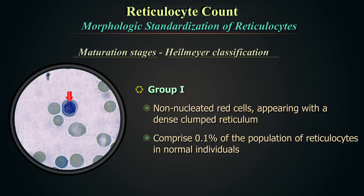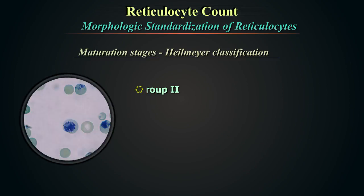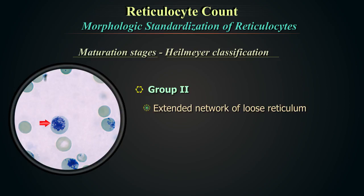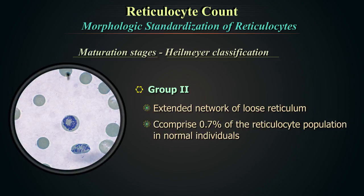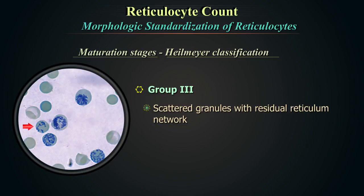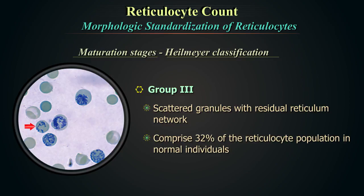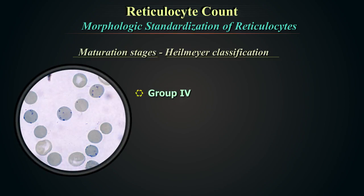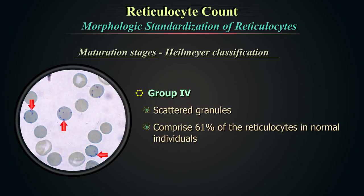Group 1 cells comprise 0.1% of the reticulocyte population in normal individuals. Group 2 represents an extended network of loose reticulum, comprising 0.7% of the total reticulocyte population. Group 3 shows scattered granules with residual reticulum network, comprising 32% of the reticulocyte population. Group 4 shows scattered granules and comprises 61% of reticulocytes in normal individuals.